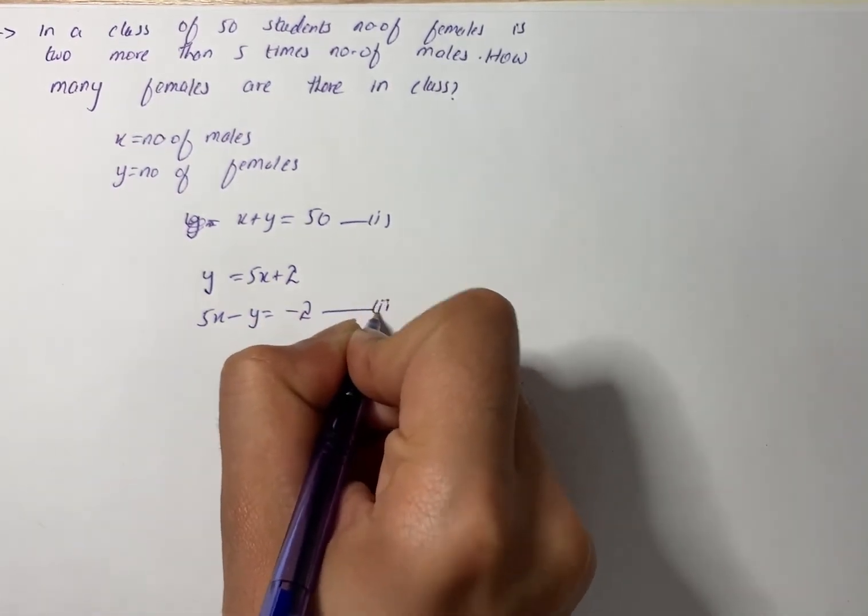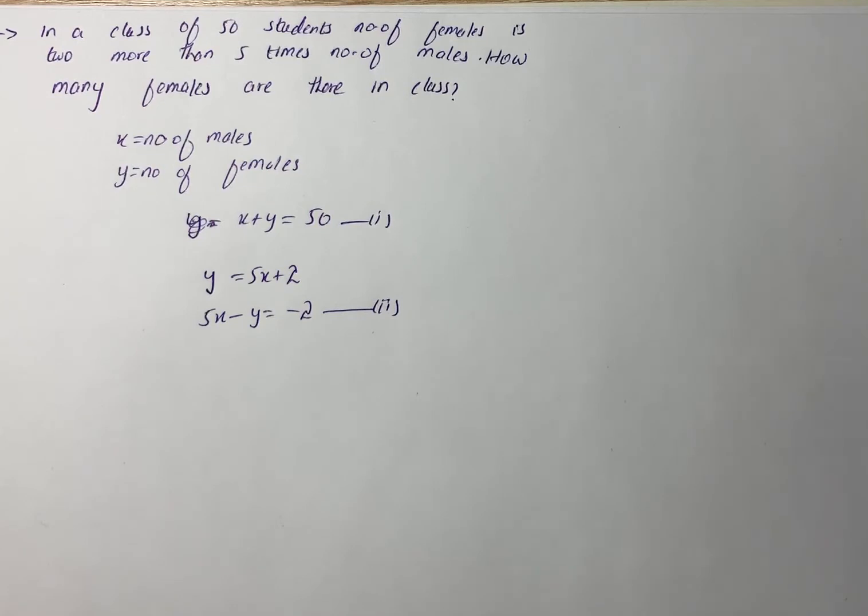To find the number of males and females, we add both equations. Adding both equations, we get 6x equals 48.